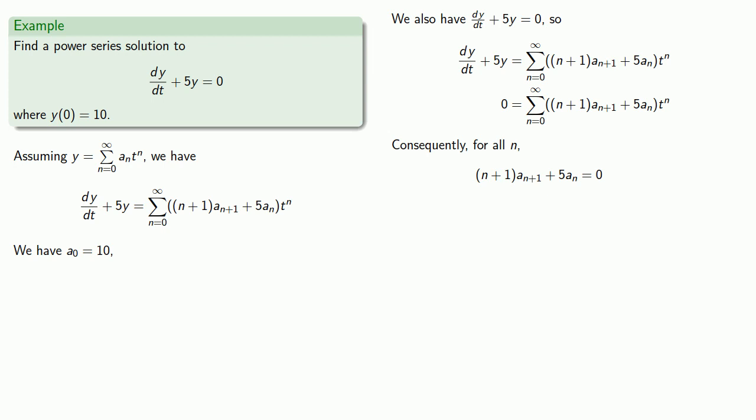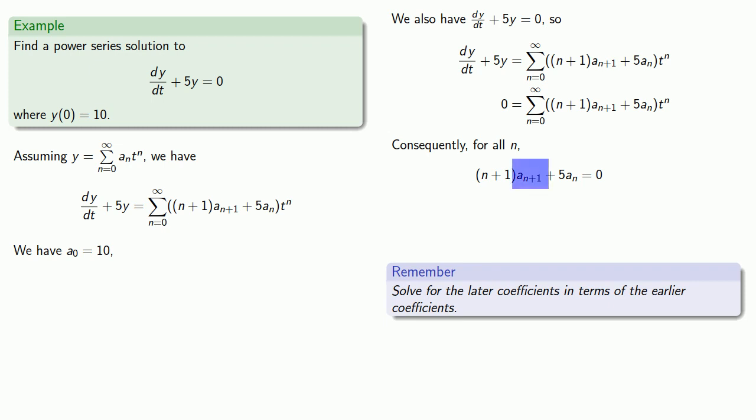Since we want to know what the coefficients are, a useful strategy is to solve for the later coefficients in terms of the earlier coefficients. So I want to solve for a(n+1) in terms of an. So solving gives us this, and so now I know how to find the coefficients.